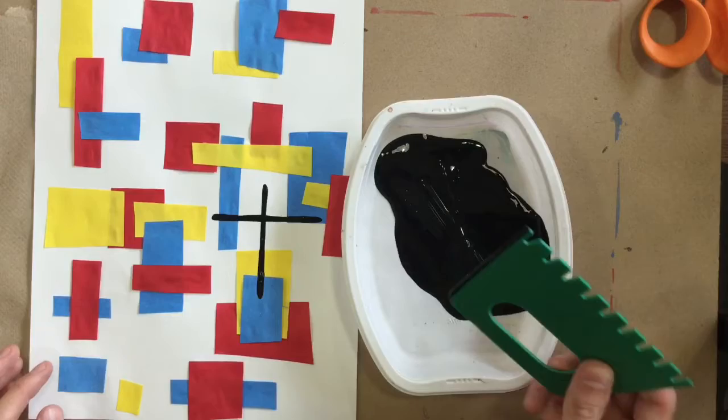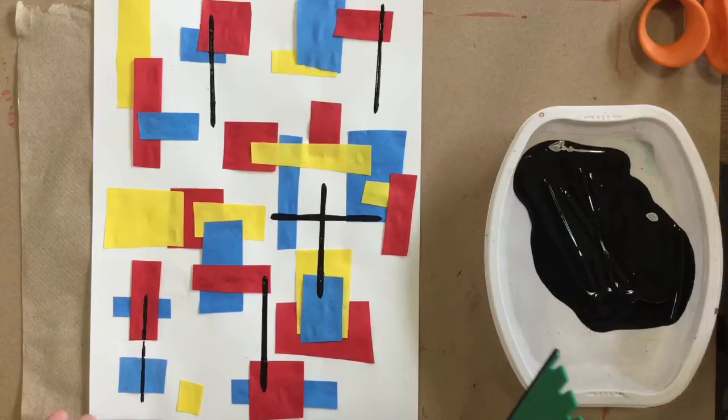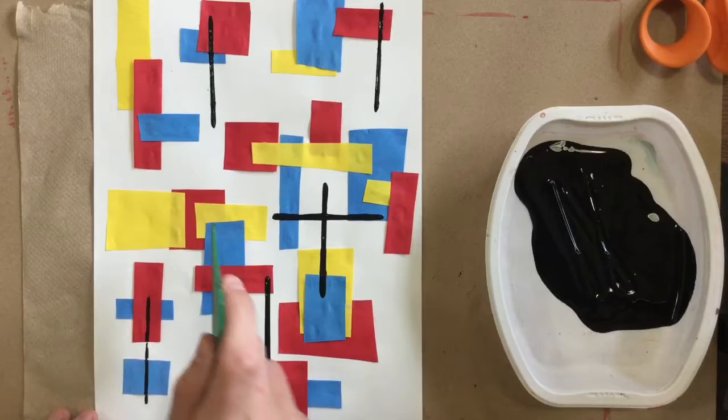And you're going to print some horizontal lines like this. We're not going to print any diagonals or any other lines, just verticals and horizontals. You can probably print a few lines without even having to dip it in the paint. Look at that. I just 1, 2, 3, 4 without even having to get any more paint on it.